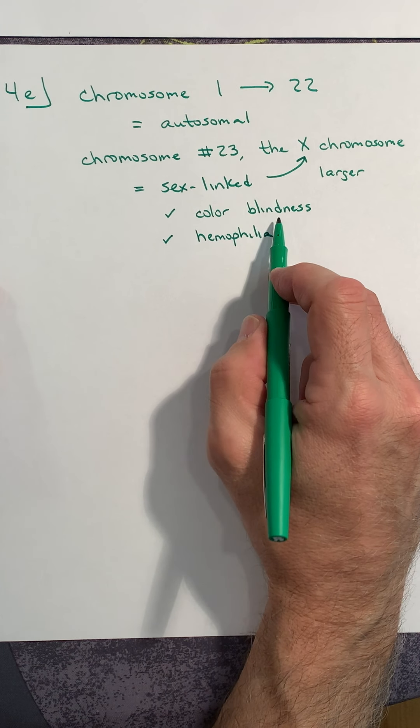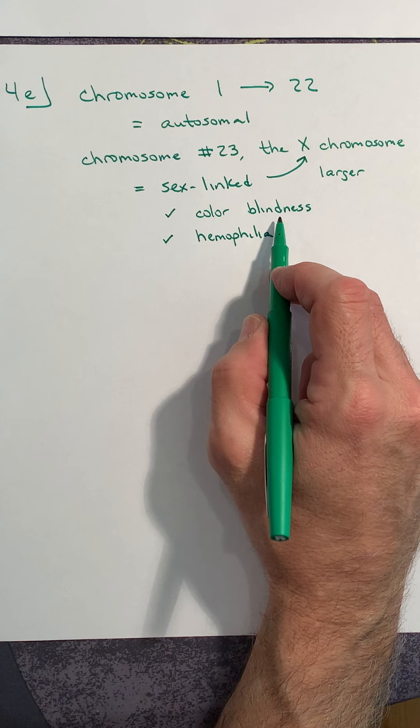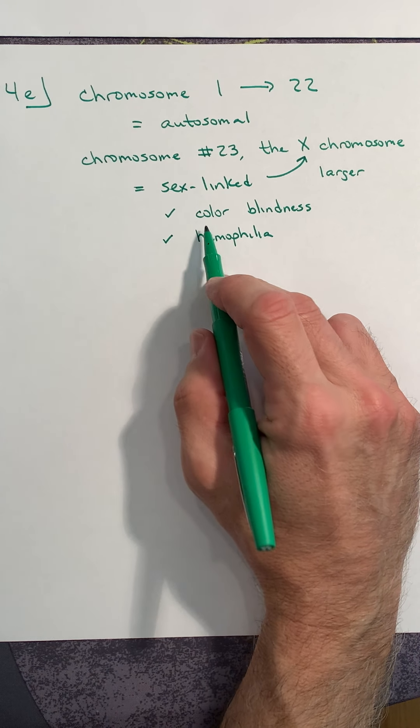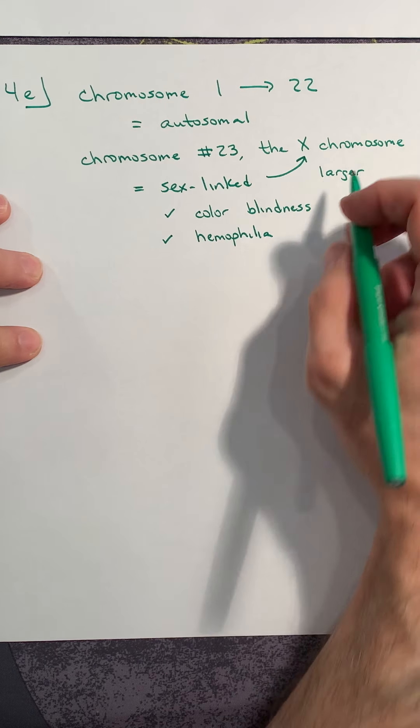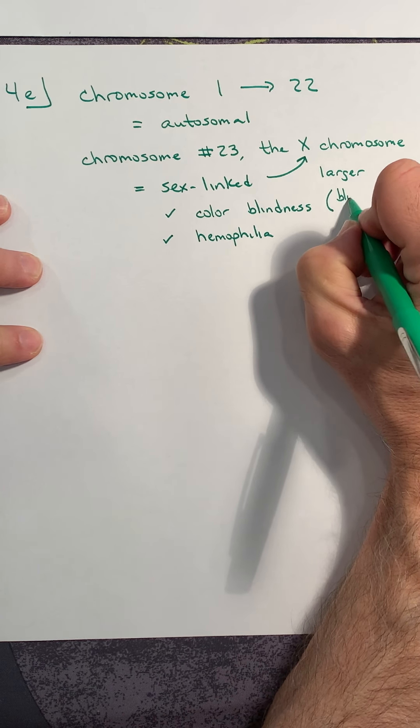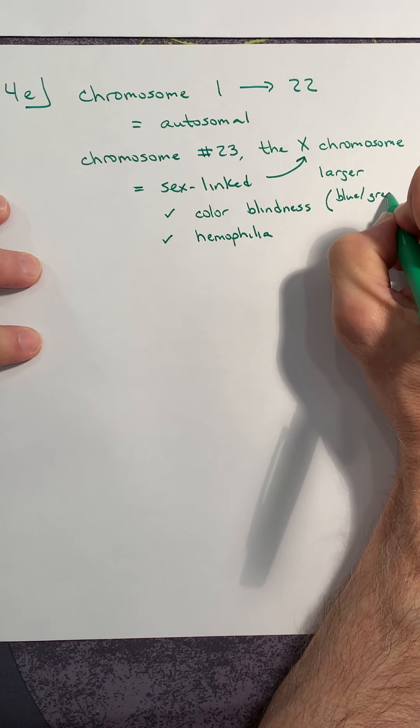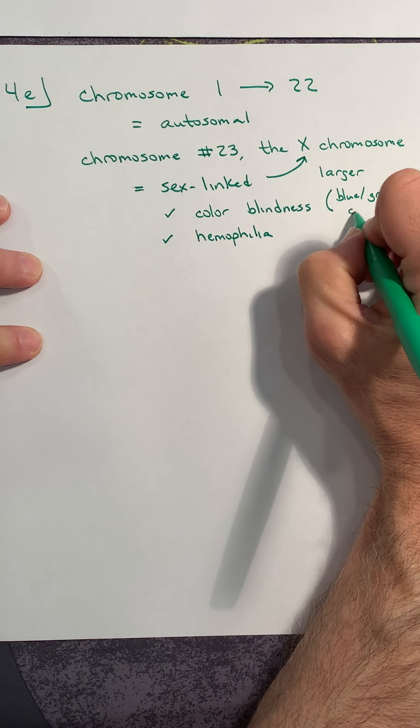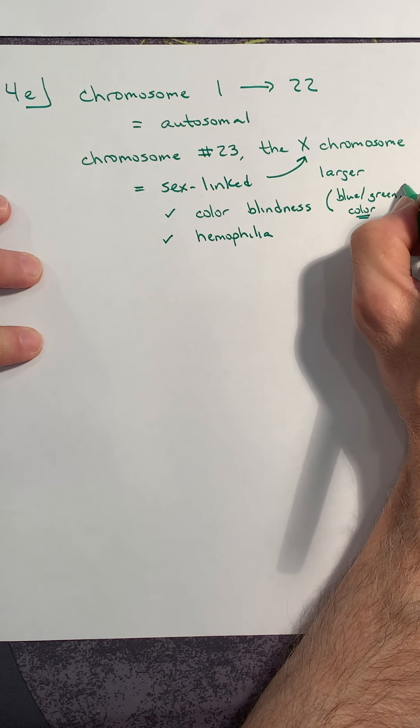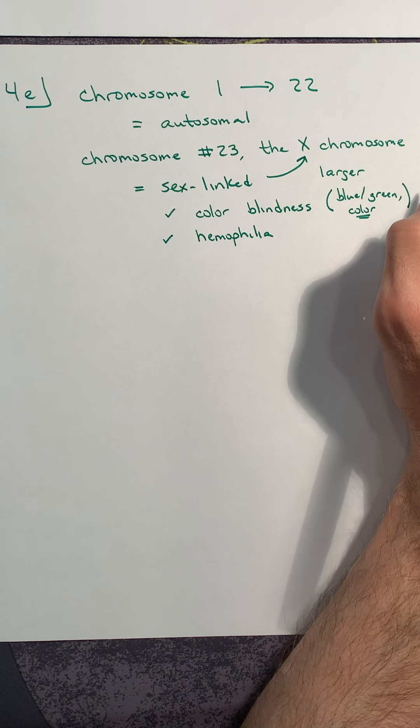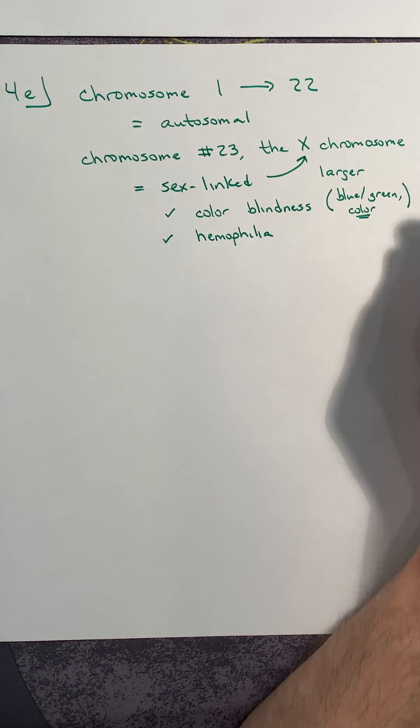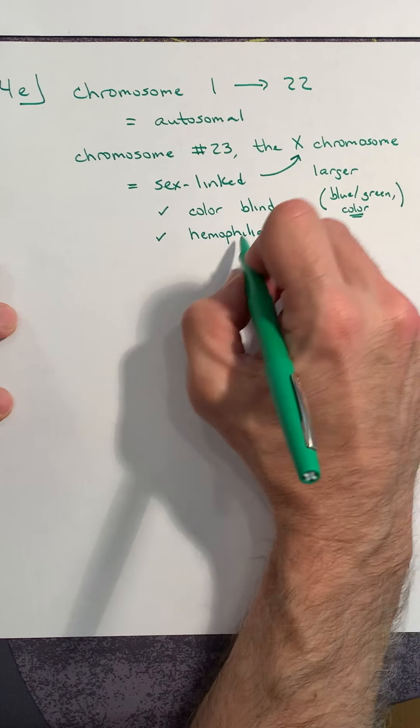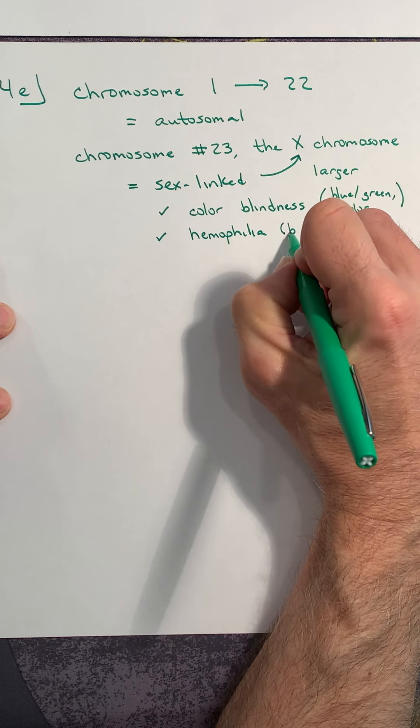When you're talking about color blindness, these people aren't blind—they actually can still see, but what they see aren't the accurate colors that the rest of us see. There's blue-green color blindness and other forms, but it's all based on color. They're not blind in that they just see black; they still have vision, they just don't see colors very well. Hemophilia—these individuals are bleeders; their blood doesn't clot properly.